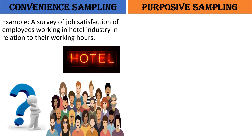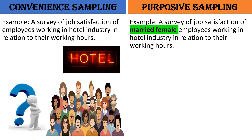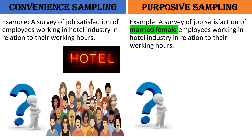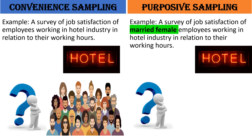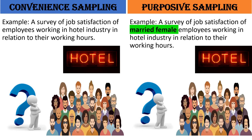On the other hand, in purposive sampling, let me take the same example: a survey of job satisfaction of married female employees working in a hotel industry in relation to their working hours. Here the difference is that the purpose of my study is to focus only on married female employees. Now if I want to collect data using purposive sampling, first I will reject all the male hotel employees in my sample selection process. So I will have only female employees. Then from female employees my first question would be: are you married or unmarried? Then as per the response I will collect data only from married female employees to fulfill the purpose of my study.